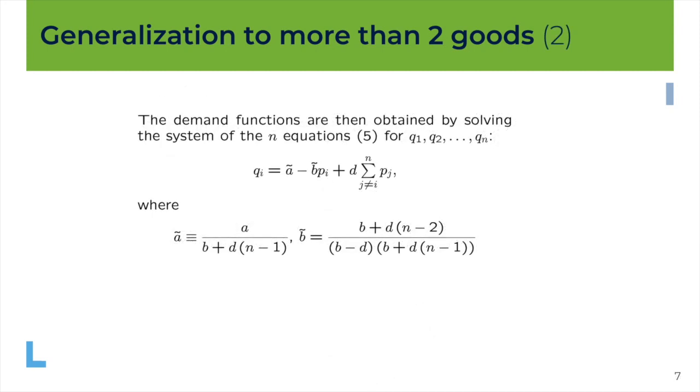And same here, this is just a continuation of what was explained in the previous slide. When you've got a given number of goods you can also express the demand functions as follows, where a tilde and b tilde are given by these expressions, they depend on the underlying parameters b and d, but also on the number of goods that the consumer can choose from. Most of the time in the course we are going to stick to two goods, but I just wanted to show you that this can be easily extended to more than two goods.